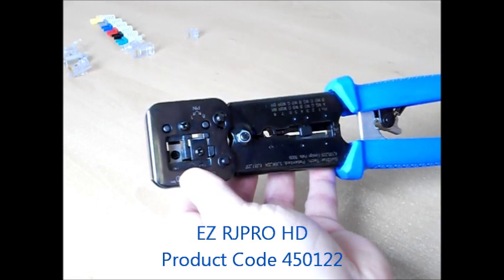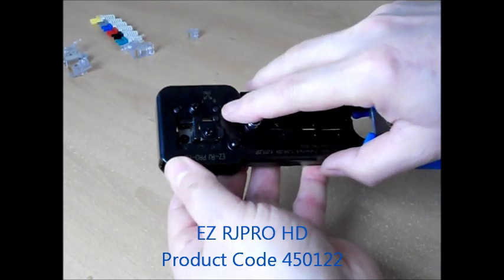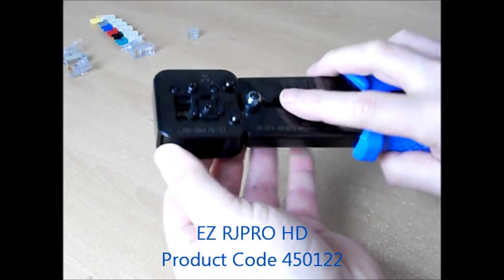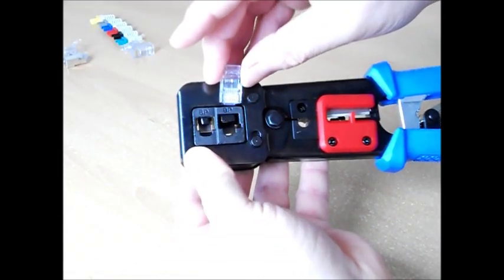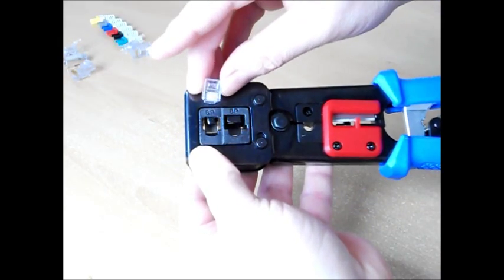This is the EZ RJ Pro HD crimping tool. This rigid frame holds two cutters, here and here, which trim the conductors on Cat5 or Cat6 connectors, here, and RJ11/12 connectors at this side.